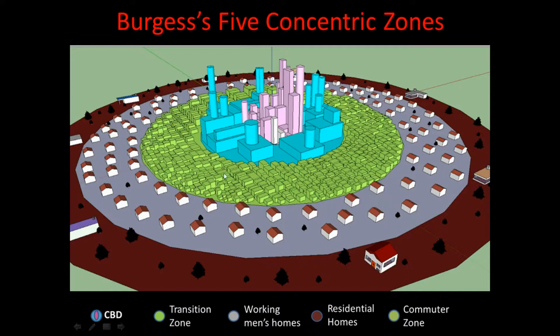The transition zone is low income. Then you get to the gray area — people are not as clustered. This is more middle class, or as the Agnew book states, the working men's homes. And then you start getting into the residential homes, or more of the suburbs as we call them nowadays. There's a lot of room for people to live, and they are very well off — mostly upper class individuals. The commuter zone is just outside of that; it refers to how people commute into the city.